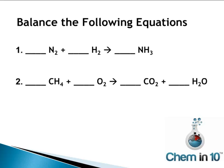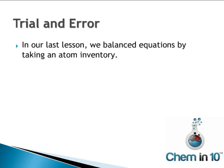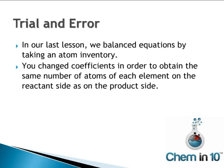Here are the answers. In our last lesson, we balanced equations by taking an atom inventory. You changed coefficients in order to obtain the same number of atoms of each element on the reactant side as on the product side.